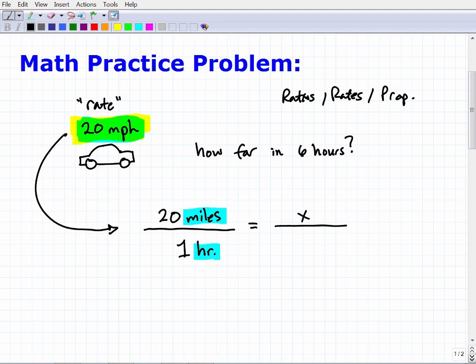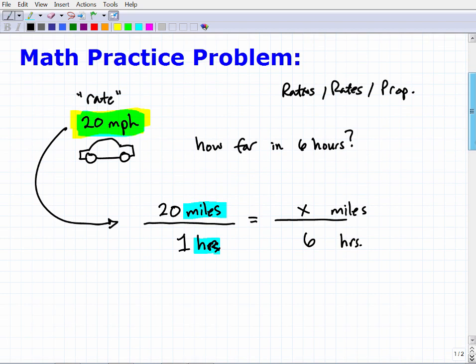Here I have miles in the numerator and hours in the denominator. So I'm gonna put miles, and then this down here will be hours. Let's make this hours. So 20 miles per one hour is the same as how many miles in six hours. You see, this is a proportion. I have an equal fraction. This fraction is equal to this fraction.